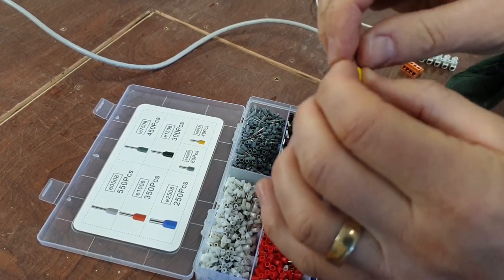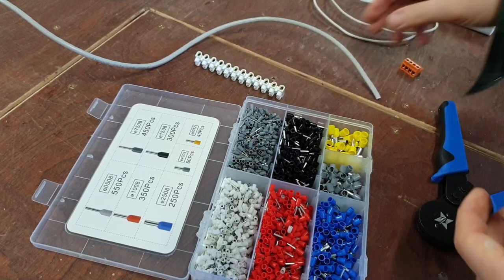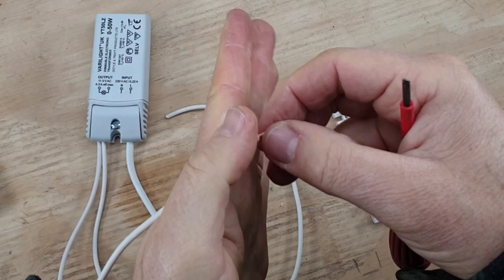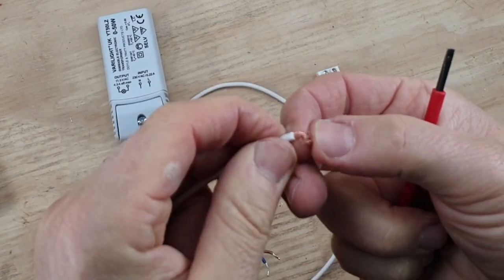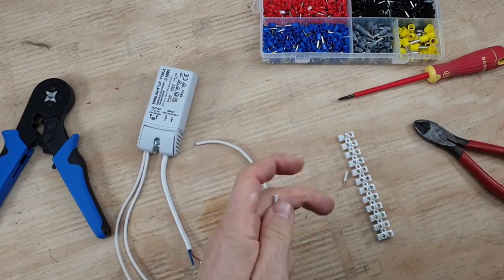And stops it from getting all crushed. If you've ever put a stranded or braided cable into a chalk block like this or a connector block, you know exactly what I mean. If you go too mad with it, it all flays out, you can even snap them. This stops that. I'll show you how.